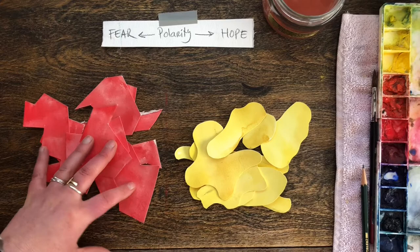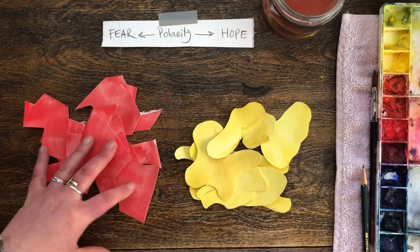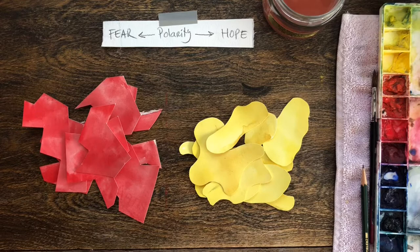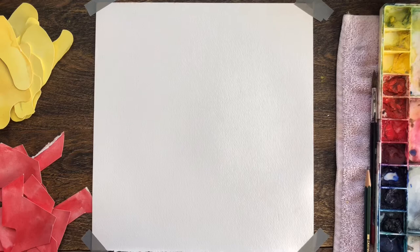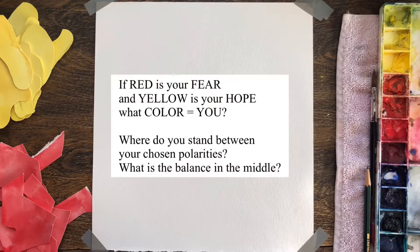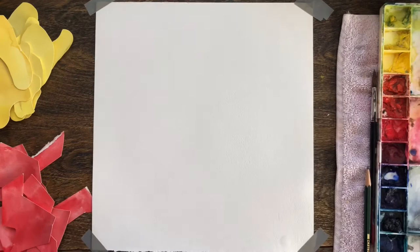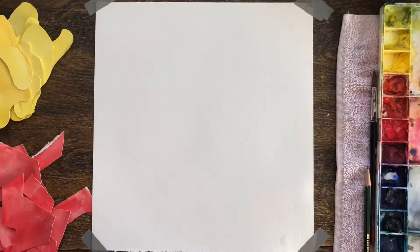You now have two piles: my jagged straight-edged red pile of fear and my yellow curved-edge pile of hope. Now get a slightly larger sheet of paper and choose a new color using the same medium — one that represents you. If you find that needs more than one color, or some variation between light and dark, that's up to you, but generally lean more toward one color rather than many.